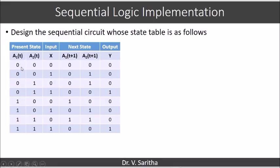So, what we have present state a1 of t, a2 of t input is x. Next state a1 of t plus 1, a2 of t plus 1 output is y. So, get the expressions for a1 of t plus 1, a2 of t plus 1 and y.